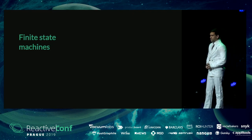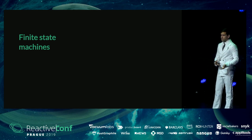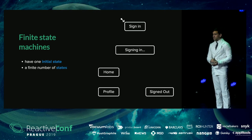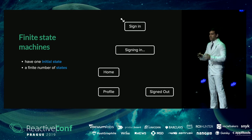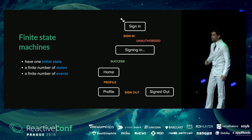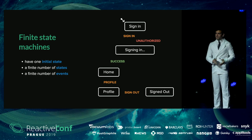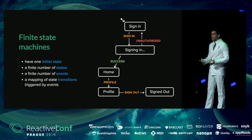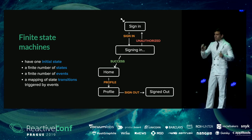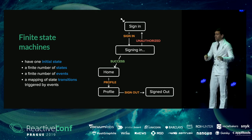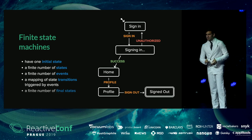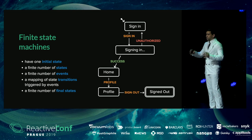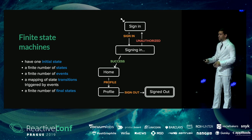Last year I talked about finite state machines and state charts as a way to introduce these abstract models into applications. A finite state machine has an initial state such as a sign-in page, a finite number of states representing all possible states a user can be in, and a finite number of events representing everything that could happen within the app. It has a mapping of state transitions triggered by these events — deterministically saying when we're in the sign-in state and a sign-in event happens, now we're in the signing-in state. There are also final states indicating the user has completed the flow.